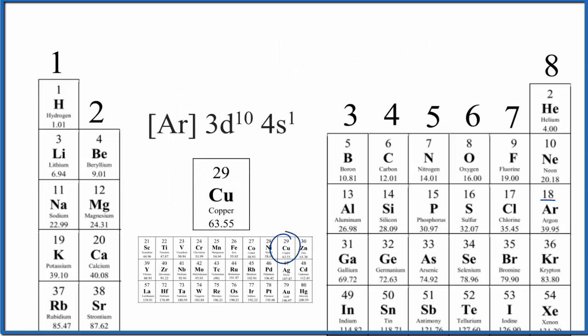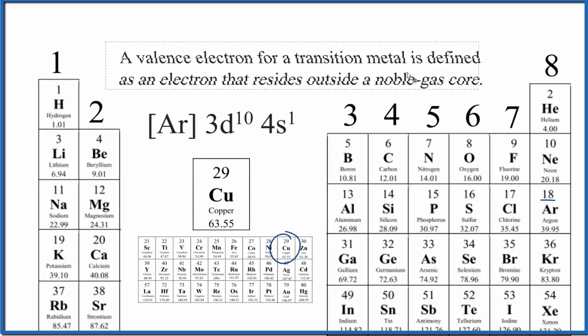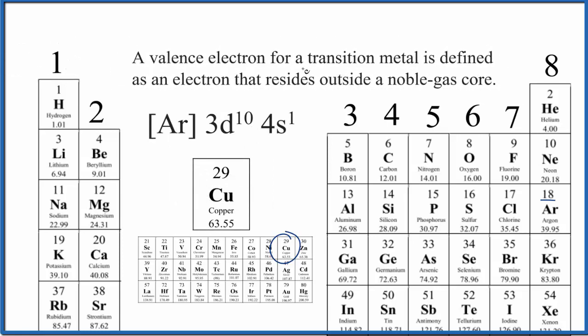So one definition for valence electrons when it comes to transition metals is that a valence electron for a transition metal is an electron that resides outside of the noble gas core. This is the noble gas core.